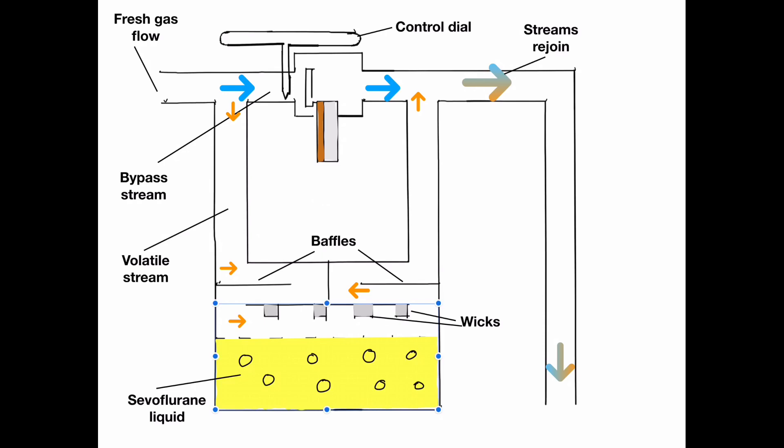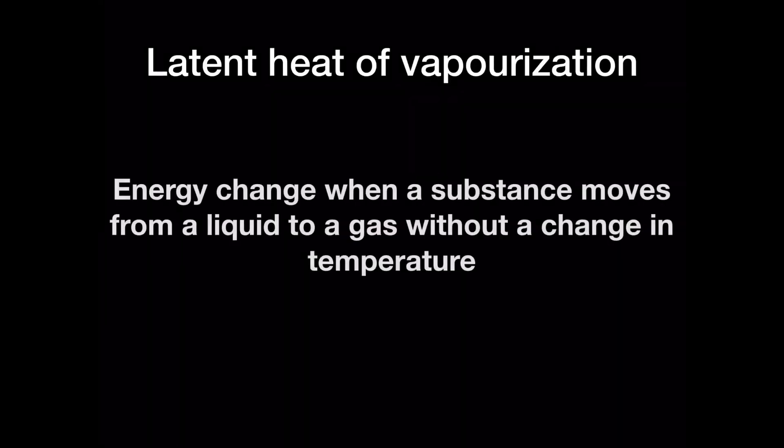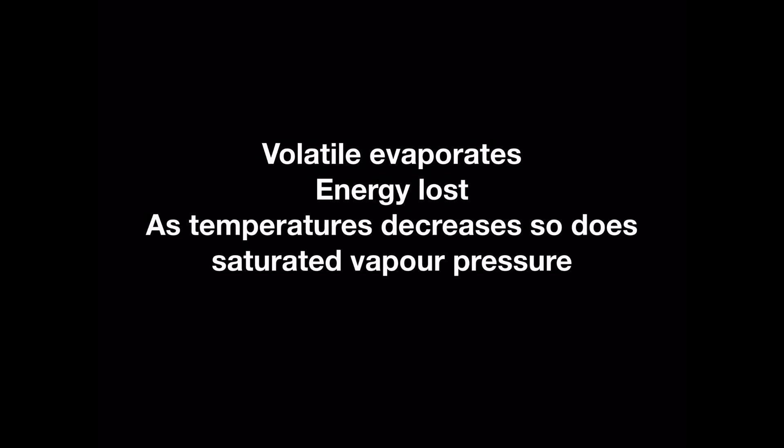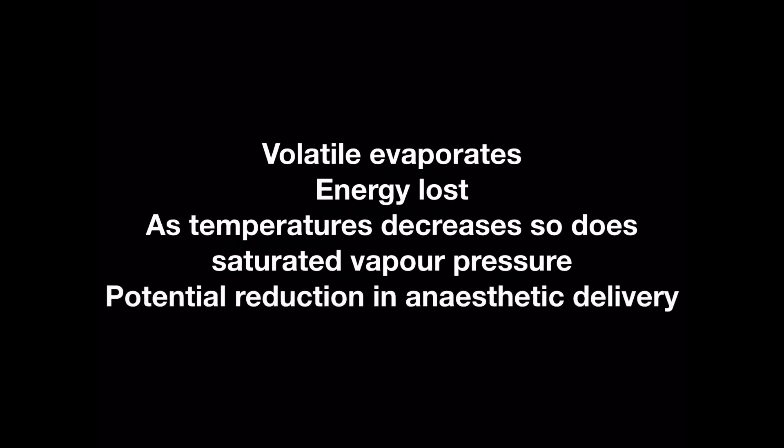If the gas from the volatile stream was not fully saturated with anaesthetic vapor, then there would be no way to control the amount of volatile anaesthetic delivered to the patient, and therefore this mechanism is crucial to the safe supply of anaesthetic agent. Due to the principle of the latent heat of vaporization, as the volatile liquid evaporates, it loses energy, causing cooling of the remaining contents. Given that the saturated vapor pressure exerted is reliant on temperature, as the temperature decreases, so does the saturated vapor pressure of the volatile, meaning the output of the vaporizer will be reduced.